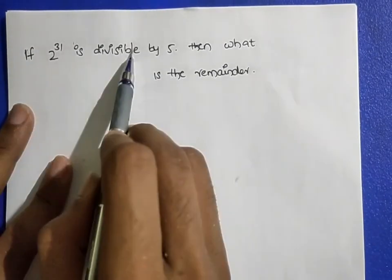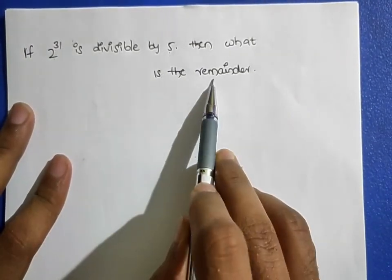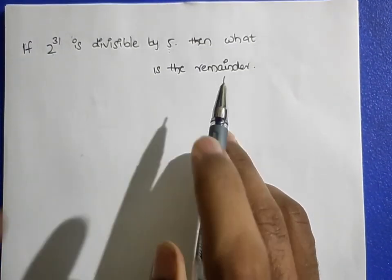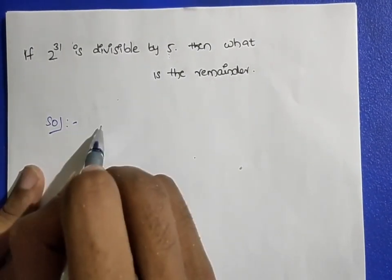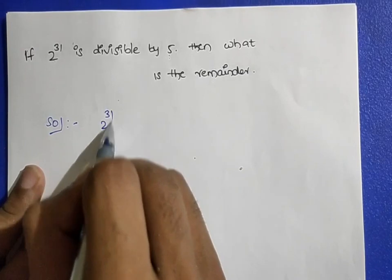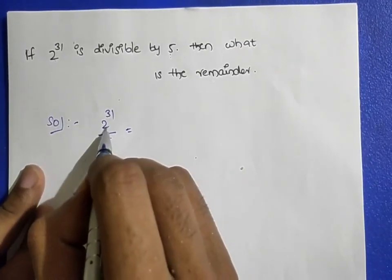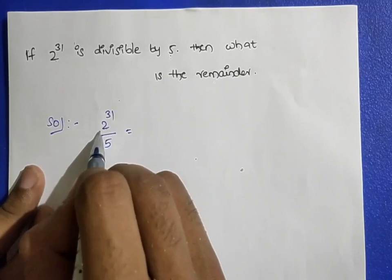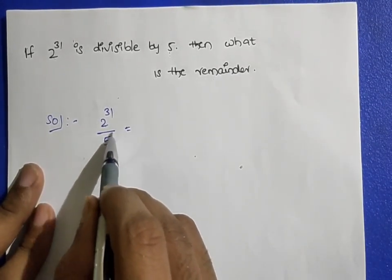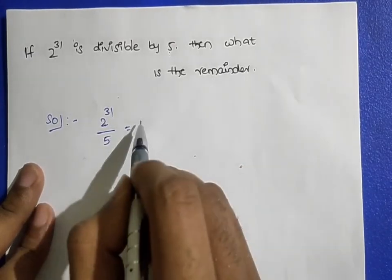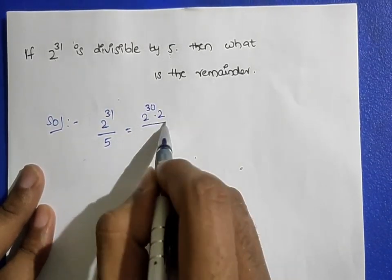Example: 2 power 31 is divisible by 5. The remainder is 3. Let me show you how to solve this. We write 2 power 30 into 2, divided by 5.